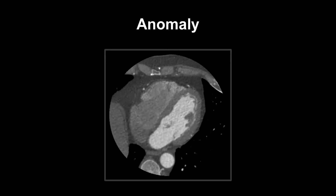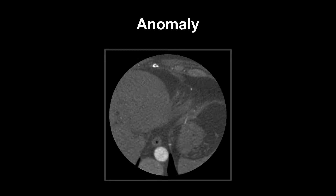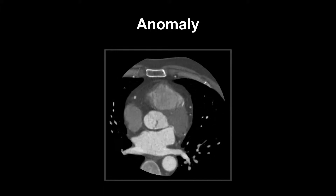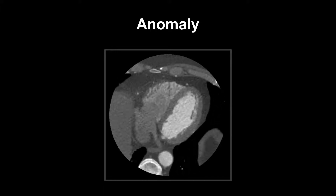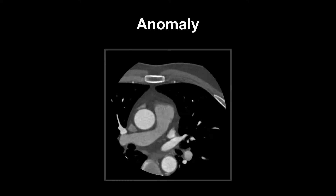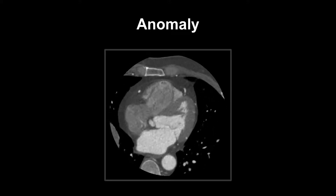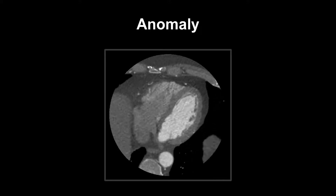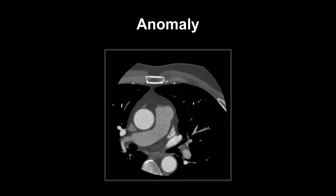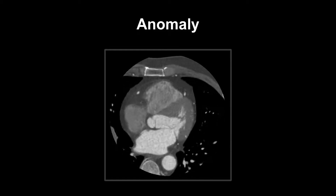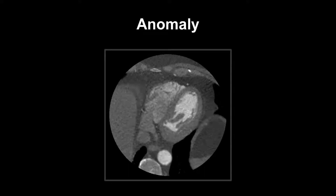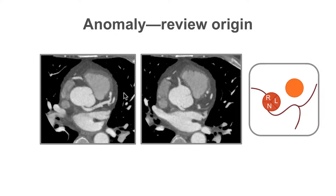What we would like you to do is look at the origins of the coronary arteries. Are you able to spot the anomaly? Look closely as to where the origins of the coronary arteries are. Does the right coronary artery emerge from the right coronary cusp? And does the left main stem emerge from the left coronary cusp? In this particular example, we can see that the left main stem arises from the non-coronary cusp. This is an example of an anomalous left main stem.